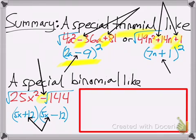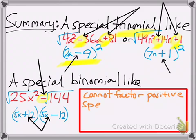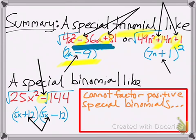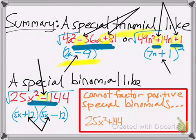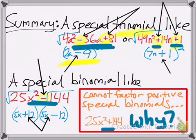Here's one quick thing to point out, because it will come up near the end of the year: you can't actually factor a positive special case binomial. If you look at the trinomial examples, you see a minus-plus pattern and a plus-plus pattern. But with the binomial, I'm only showing a minus example. So if you were to have the sum of two perfect squares, you can't really factor it — and if you try, you won't be able to get an answer. That's going to come up later in the school year.